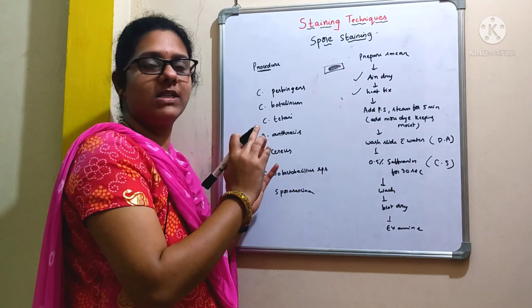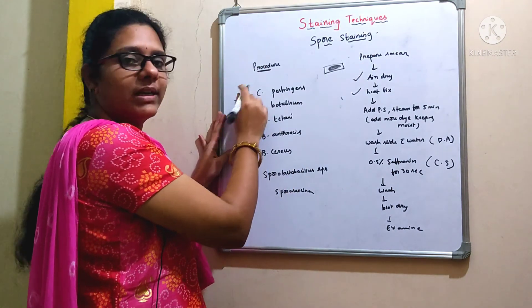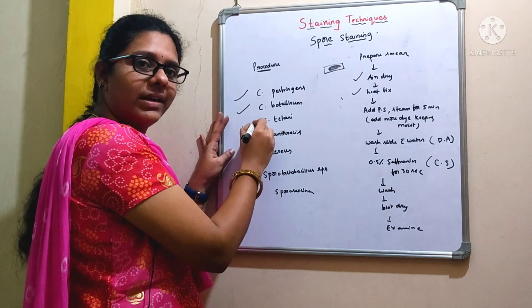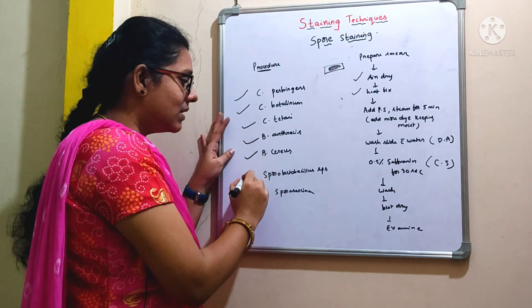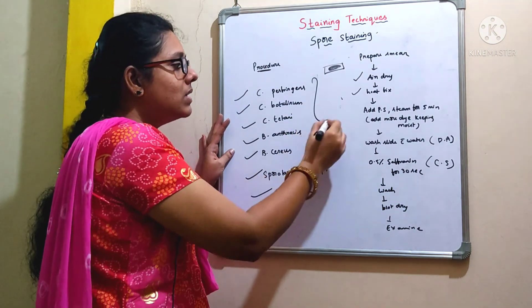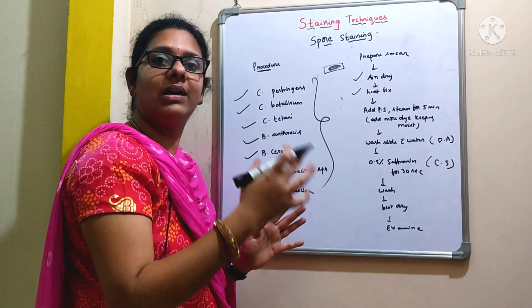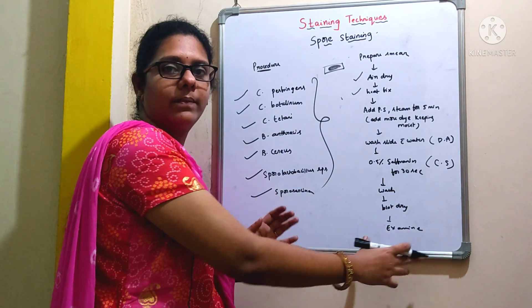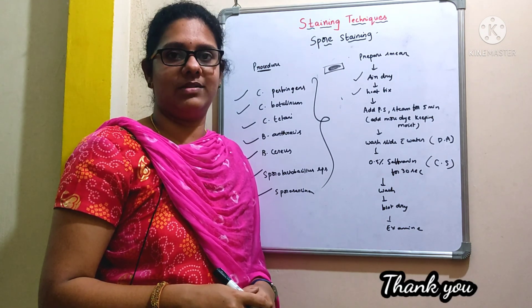These are some examples of spore formers that give a positive result with spore staining: Clostridium perfringens, Clostridium botulinum, Clostridium tetani, Bacillus anthracis, Bacillus cereus, Sporolactobacillus species, and Sporosarcina. All these organisms are spore formers where you can observe green color when examining the slide under the microscope. This is all about the spore staining technique. Thank you so much.